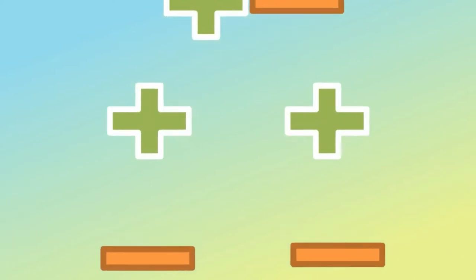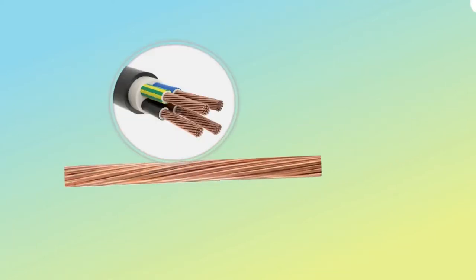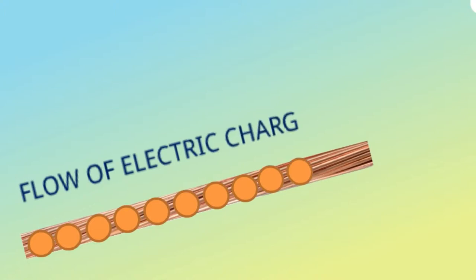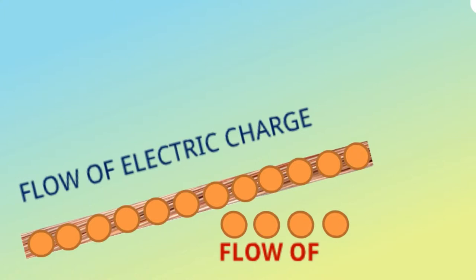If we take a very small piece of bare wire, this flow will be like this. So this is the flow of electric charge, which means it's simply the flow of electrons.